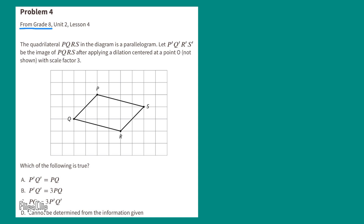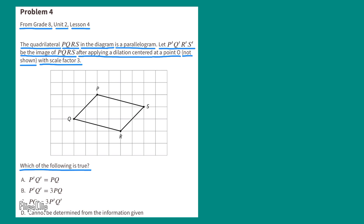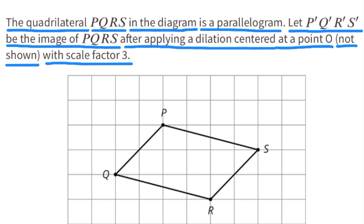Problem number four, from 8th grade, Unit 2, Lesson 4. The quadrilateral PQRS in the diagram is a parallelogram. Let P', Q', R', and S' be the image of PQRS after applying a dilation centered at a point O, not shown, with scale factor 3. Which of the following is true? A few things are important to note: P'Q'R'S' is a dilation of PQRS with a scale factor of 3.